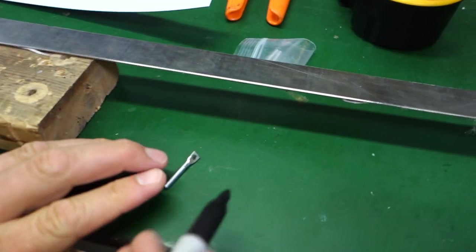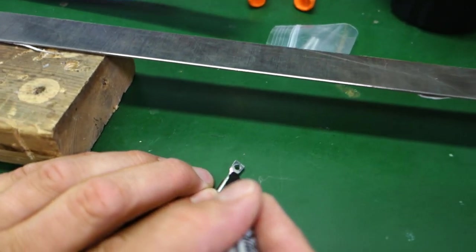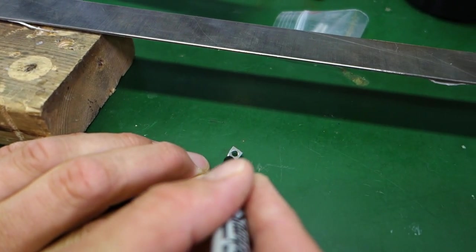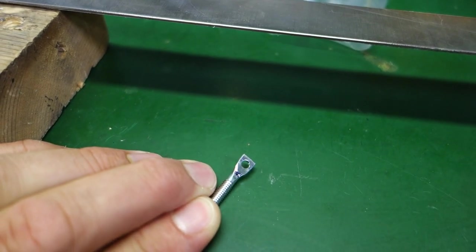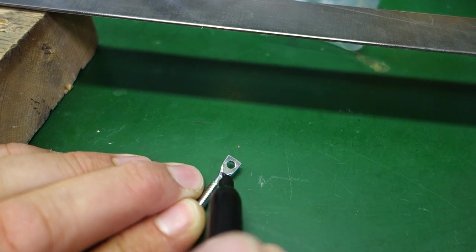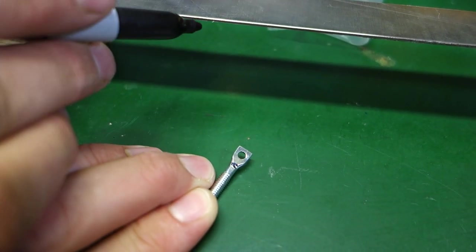It's really hard to see the divot, so I'm going to hit the divot with a Sharpie. Now can you see the divot?